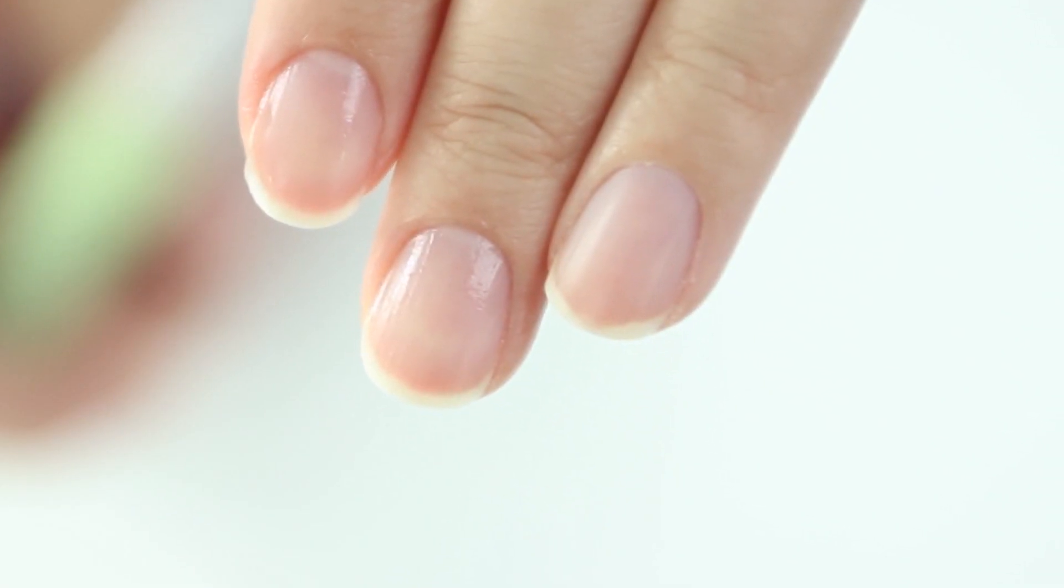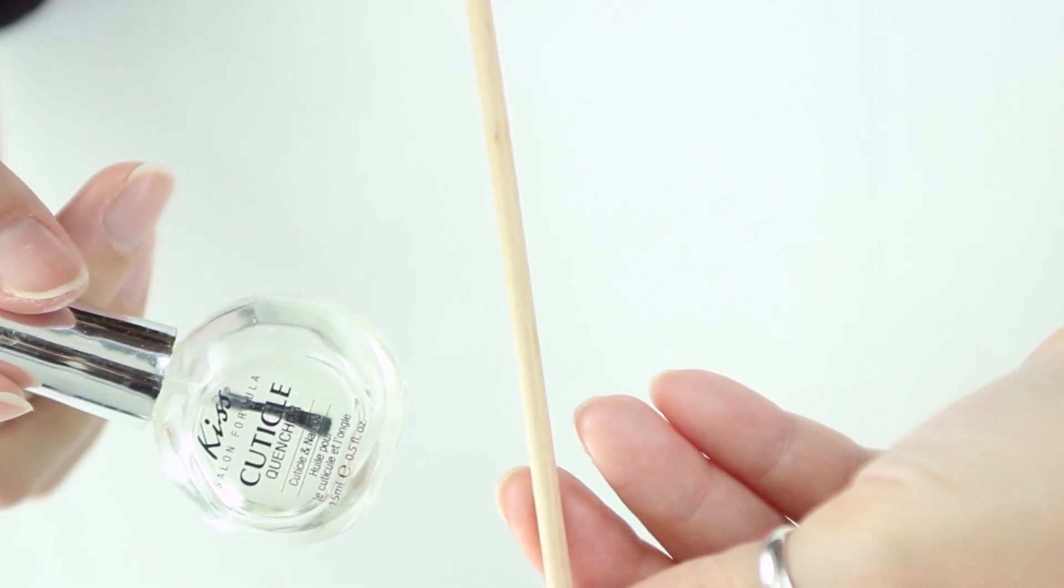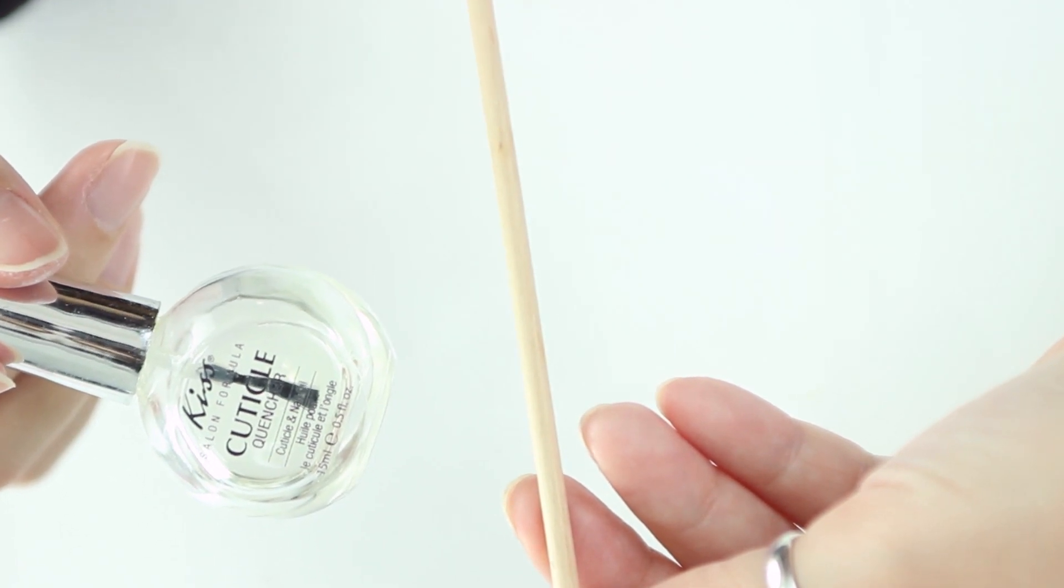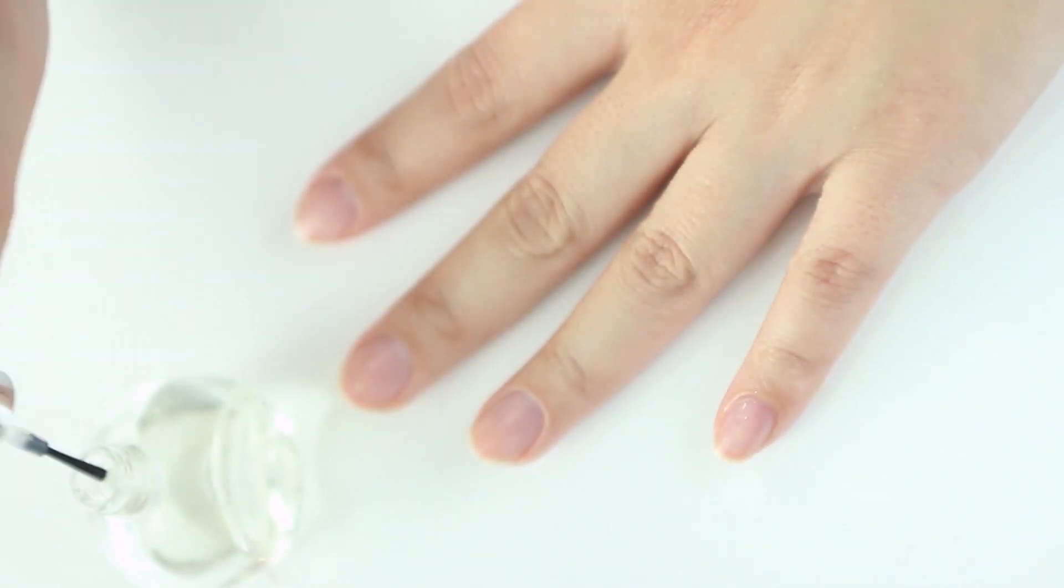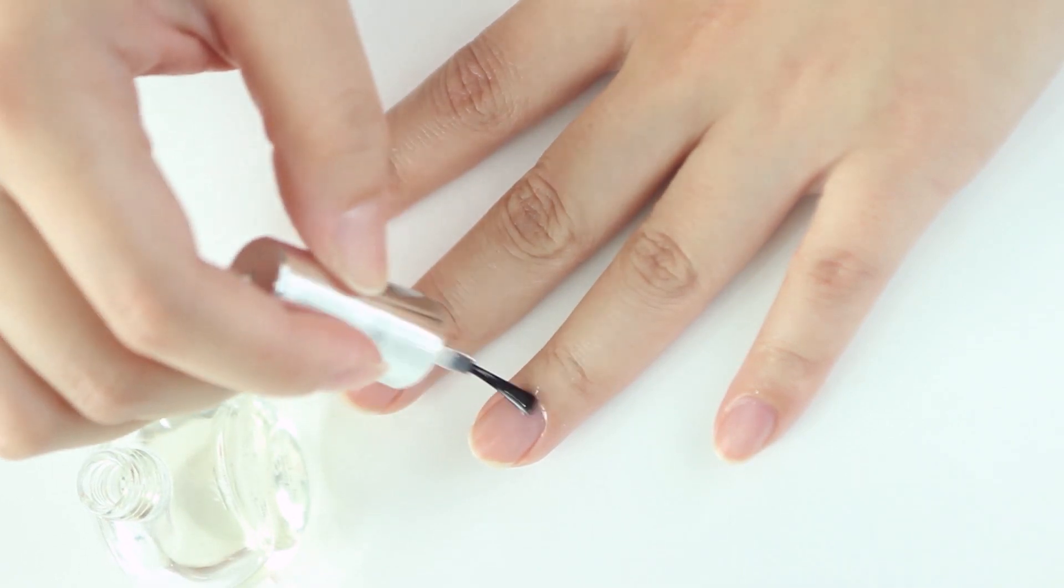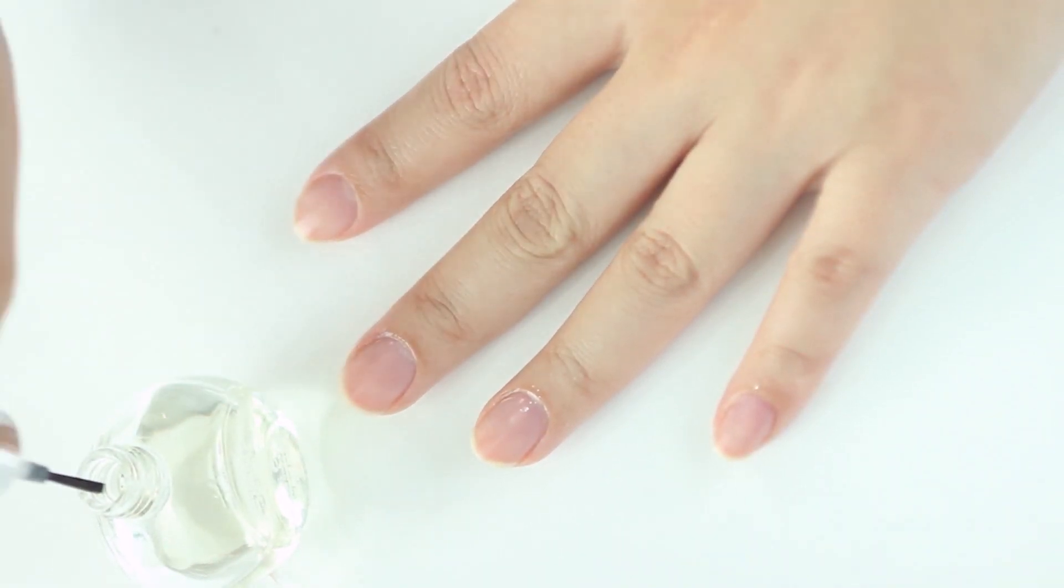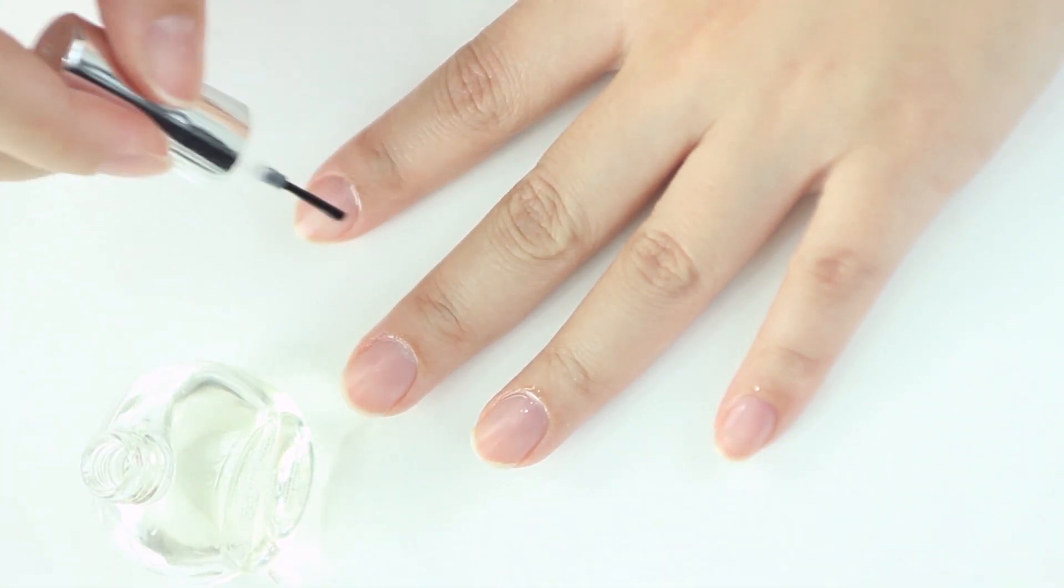The other method if you don't have this particular pen is to actually use an orange stick with a cuticle oil. So first you want to soak your cuticles with the oil and let it sit for 20 to 30 seconds. And then start pushing with the orange stick to remove the debris on your nails.